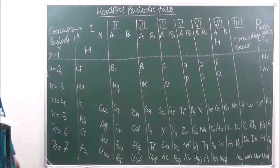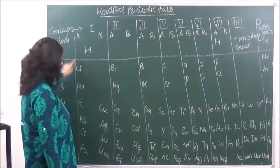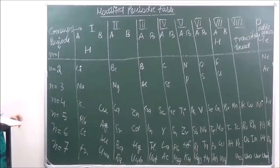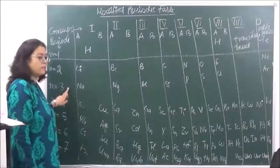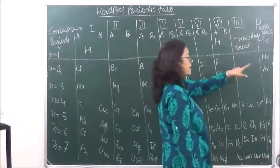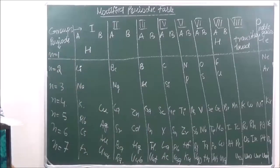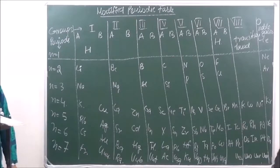The entire table is divided into 7 periods. The first period has only 2 elements — hydrogen and helium — so it is known as the very short period. The second and third periods each have 8 elements and are known as short periods. The fourth and fifth periods each have 18 elements and are both known as long periods.